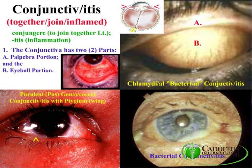There are two parts. One is referred to as the eyeball portion — the part that covers the sclera of the eye. The other part covers the eyelid, and it's referred to as the palpebral portion.